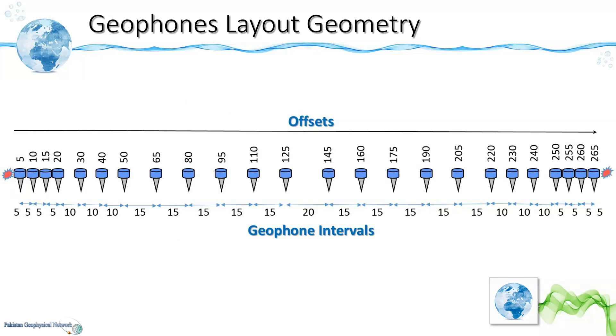So this is a typical geophones layout geometry for refraction forward reverse shooting. As we can see here at the top we have the offsets whereas at the bottom we can see the interval between two consecutive geophones.